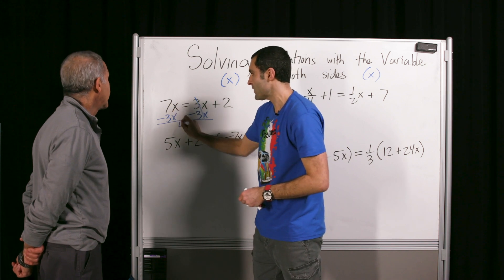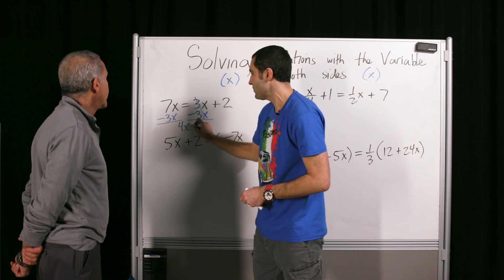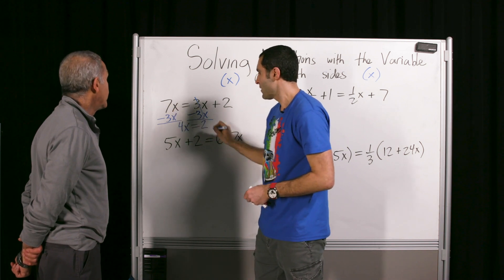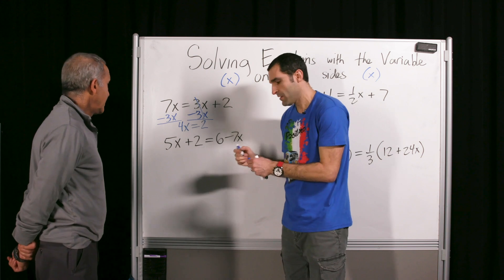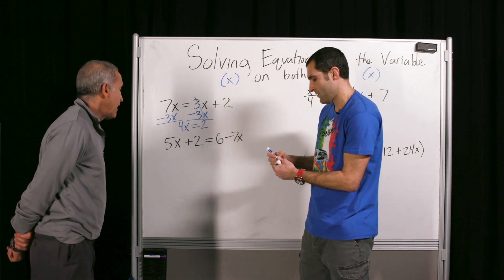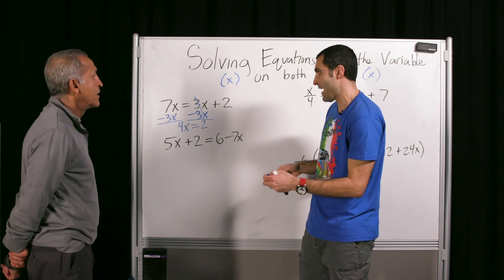Minus 3x on either side. So now x found some friends. To isolate the variable means to put all the x's on one side and everything that's not x on the other side. What's this become? Four x equals two. And what would x be? X equals one half.